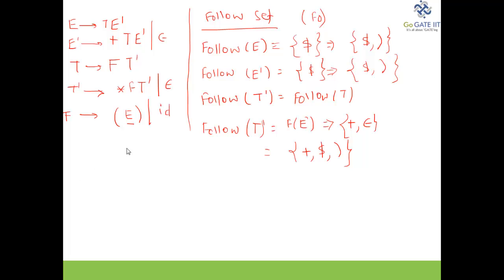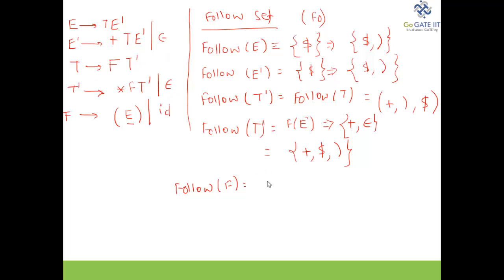I hope you are following. Follow of T is {plus, ')', dollar}. Finally for follow of F: first of T-dash gives epsilon, so follow of F equals first of T-dash minus epsilon, unioned with follow of T — that is {star, plus, dollar, ')'}. So this is how we calculate the follow set for the given grammar.